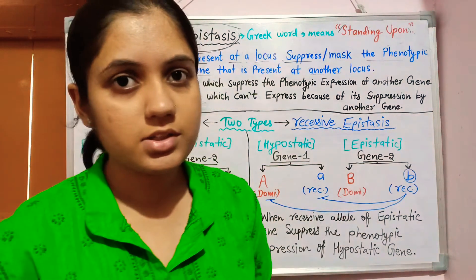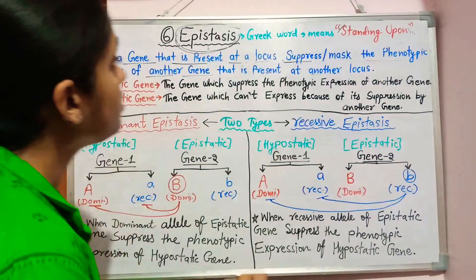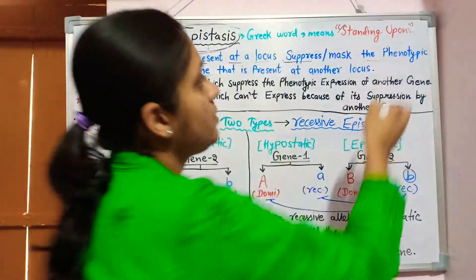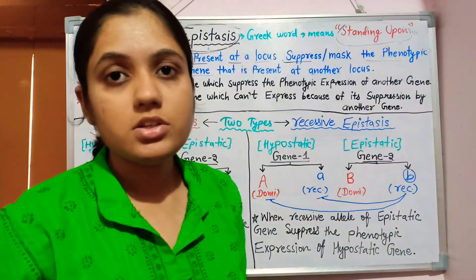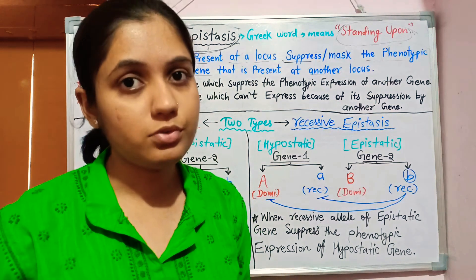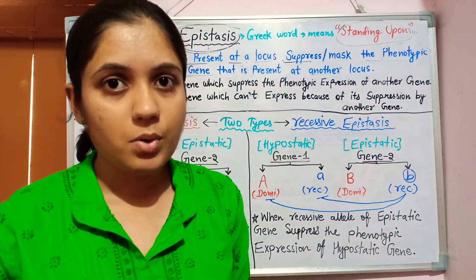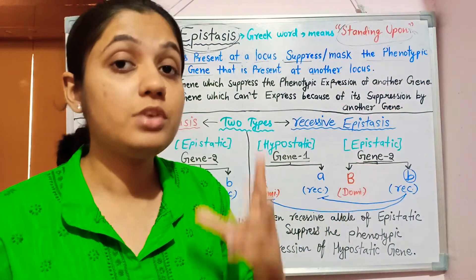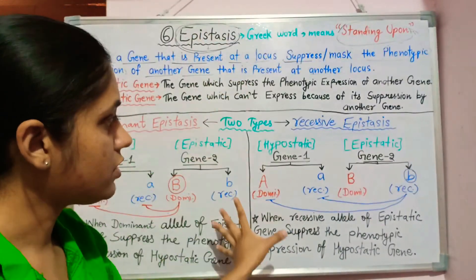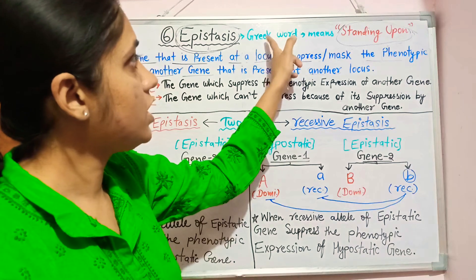Epistasis is originated from a Greek word which means 'standing upon.' In intergenic interaction, two genes are involved, and one gene is more powerful than the other. This powerful gene stands upon — that is, suppresses — the phenotypic expression of the other gene. This process is known as epistasis.